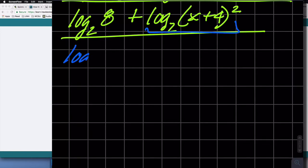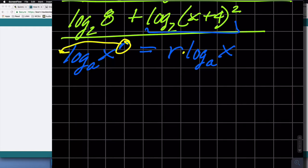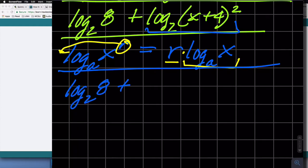The property is logarithm of some base of x raised to the r can be rewritten as r times the logarithm base a of x. You guys think of it as I'm allowed to write this down in front of the logarithm, creating this product of r, the exponent, times the original logarithm, less the exponent on the argument. So taking that into account, I can rewrite the first logarithm without any changes, and the second logarithm as 2 times the logarithm base 2 of the quantity x plus 4.